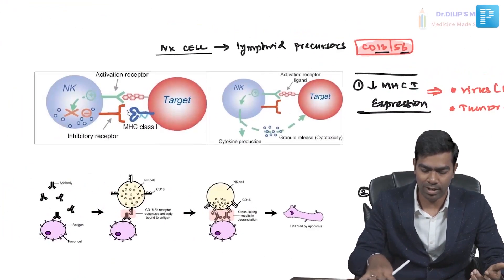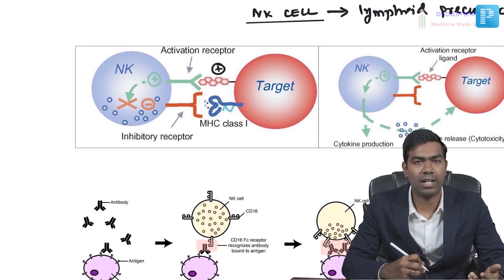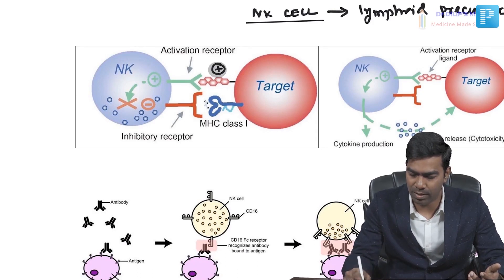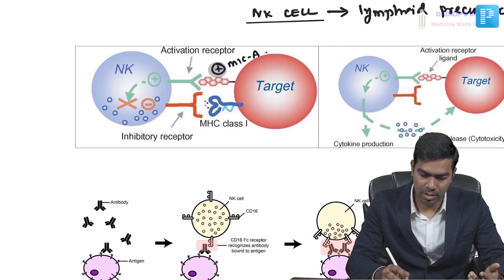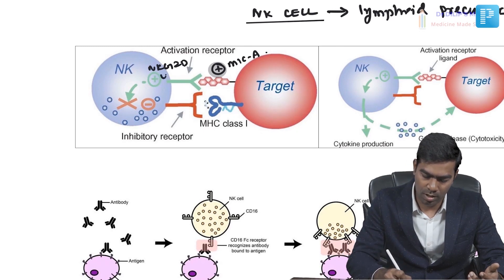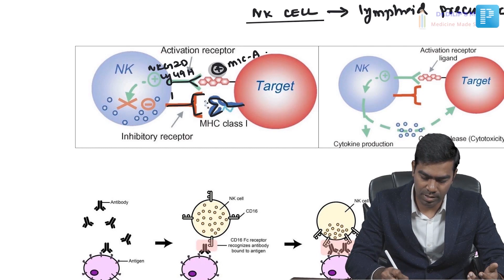Looking at the diagram: on the target cell side, the activating receptor is MICA, which is recognized by NKG2D or LY49H on the NK cell — this is an activating interaction. MHC class 1 on the target cell recognized by the KIR receptor on the NK cell is an inhibitory interaction.